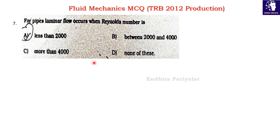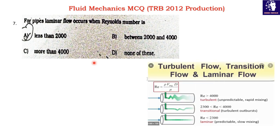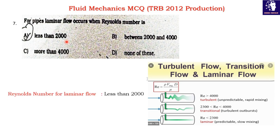Question 8: In pipes, laminar flow occurs when the Reynolds number is — Option A: less than 2,000; Option B: between 2,000 and 4,000; Option C: more than 4,000; Option D: none of these. Turbulent flow occurs when Reynolds number is greater than 4,000. Laminar flow occurs when Reynolds number is less than 2,000. Option A is the correct answer.